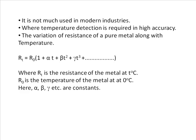Where RT is the resistance of the metal at T degrees centigrade. R0 is the temperature of the metal at 0 degree centigrade. Alpha, beta, gamma etc are constants. This is the equation upon which an RTD is based.